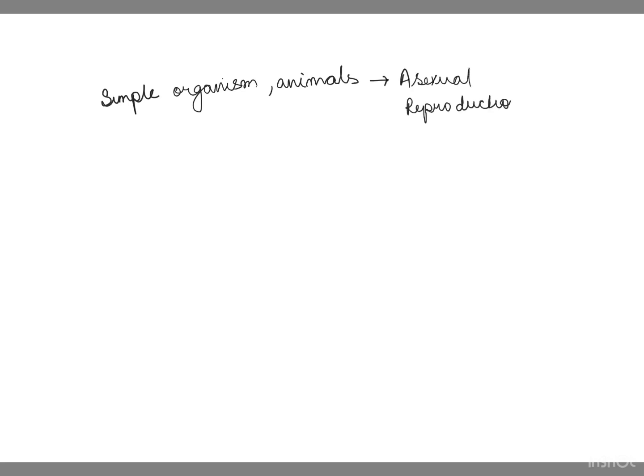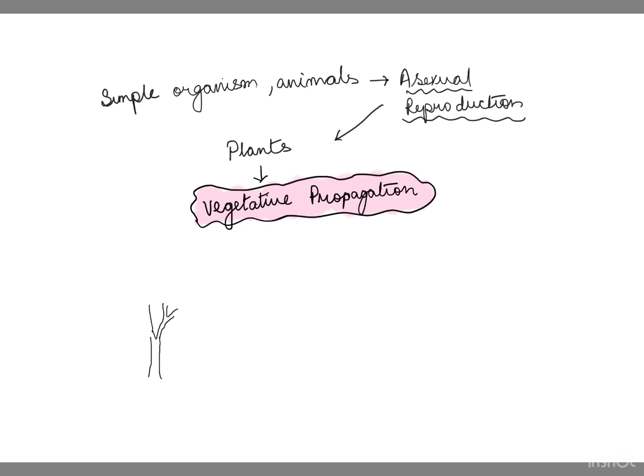In plants, asexual reproduction is called vegetative reproduction or vegetative propagation. In this process, new plants grow from parts of the parent plant such as roots, stems, or leaves. For example, in potato or ginger, new plants can grow from the parent plant's parts.